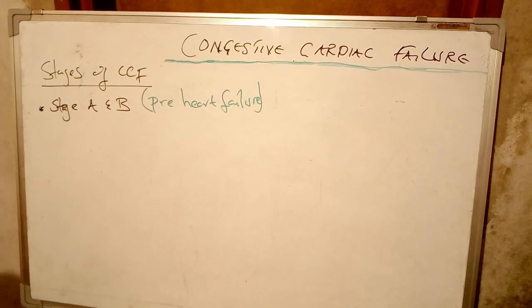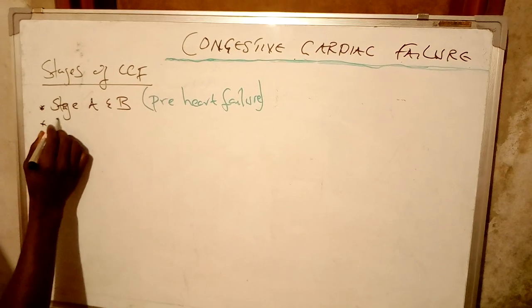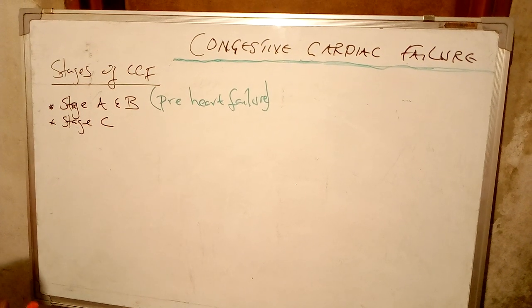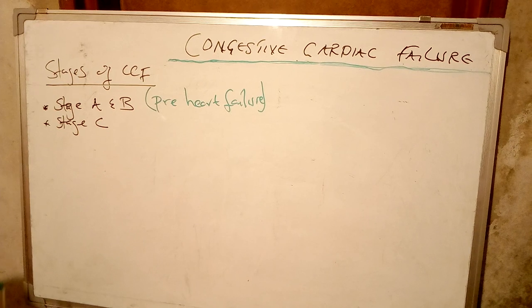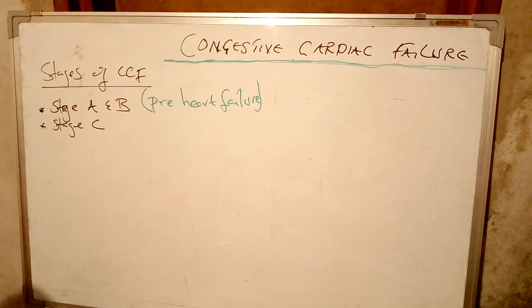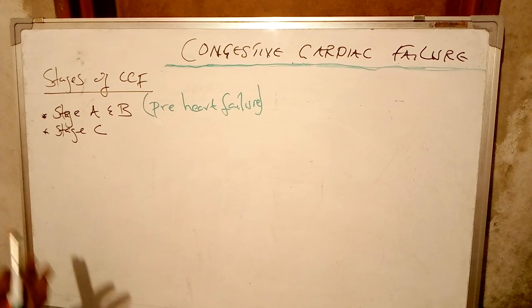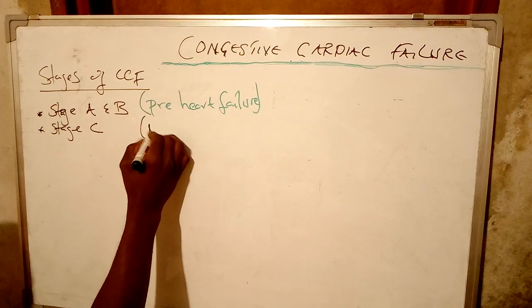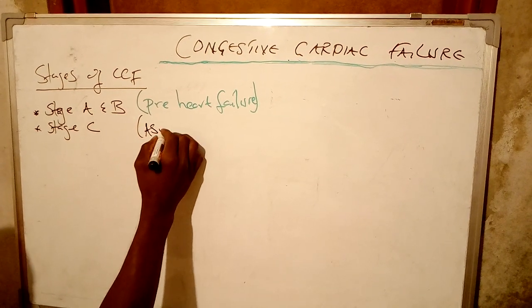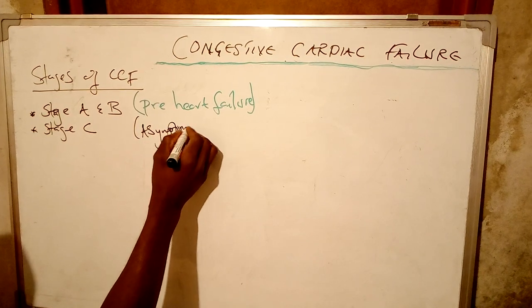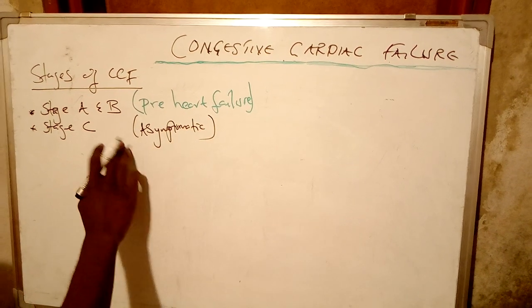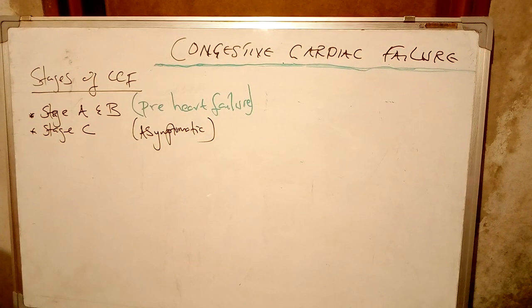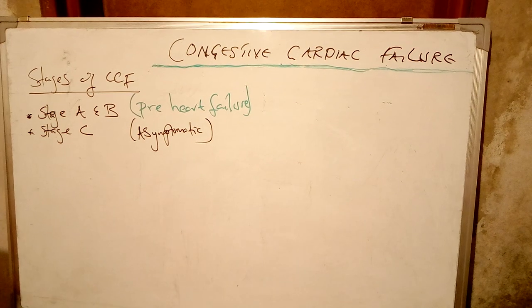We also have stage C. Stage C patients are those whose heart structure has been damaged, but the damage is not that much severe. These patients are sometimes asymptomatic. The structure of the heart is actually distorted, but not severely, and sometimes they are symptomatic.